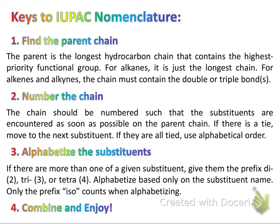Next, I would argue that numbering the chain is the trickiest part. We want to number them such that the substituents are encountered as soon as possible on the parent chain — we want them to have as low numbers as possible. If going from two different directions you encounter a substituent at the same time, you go to the next substituent, and so on. If they are all tied regardless of direction, we resort to alphabetical order.